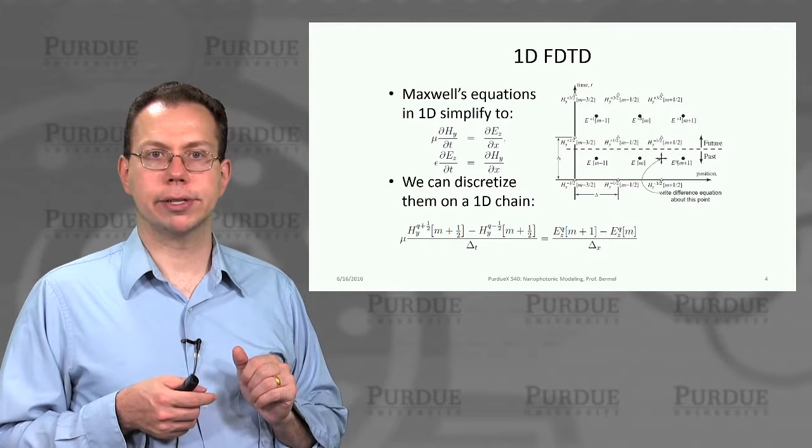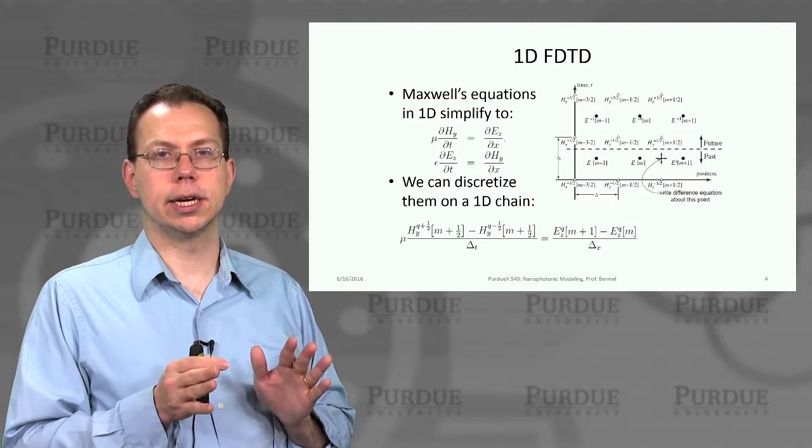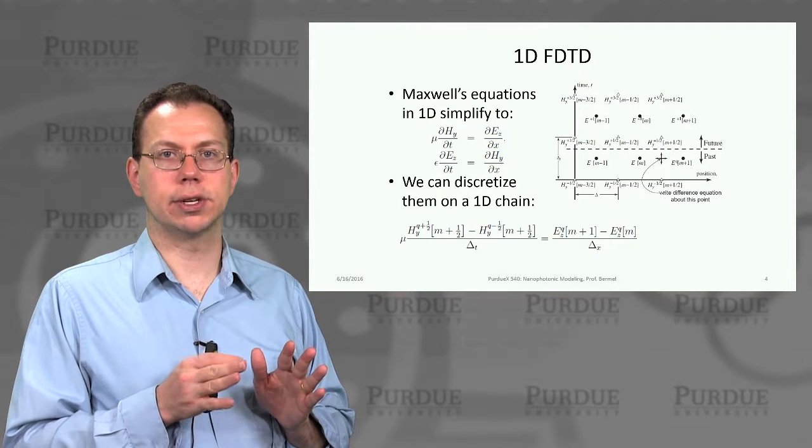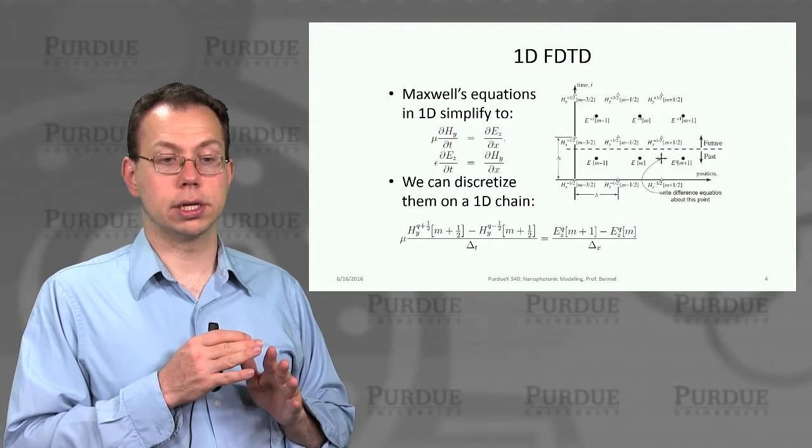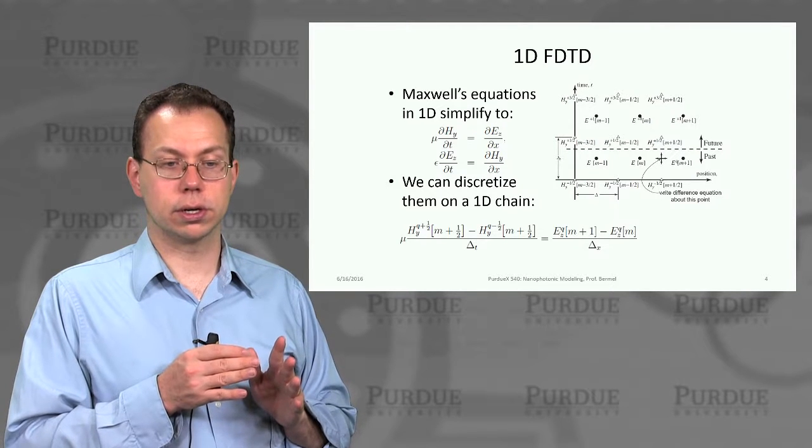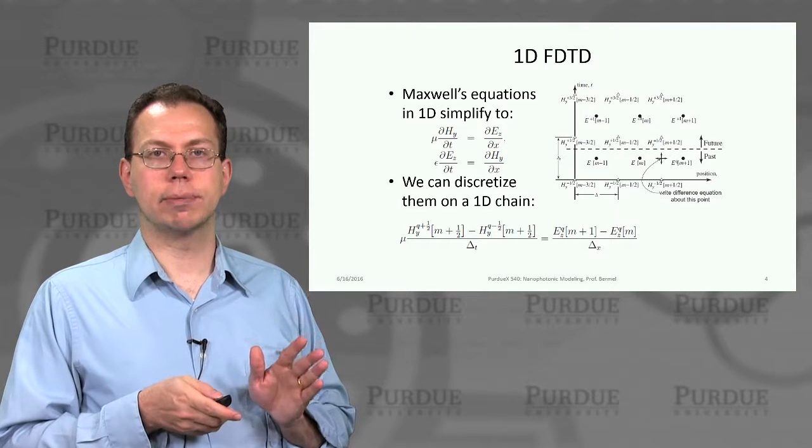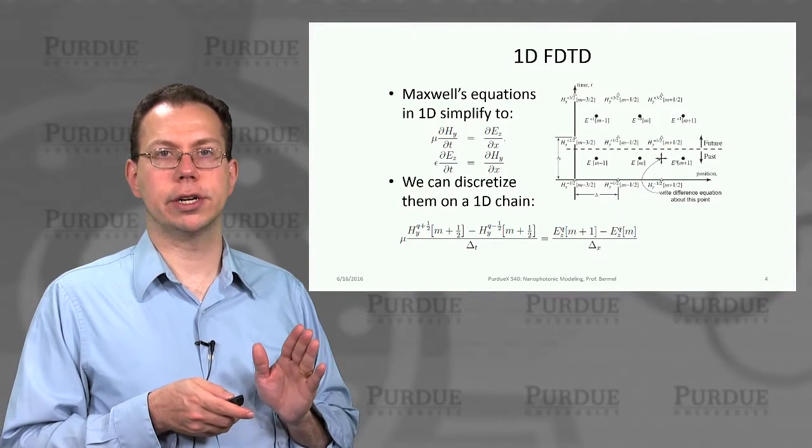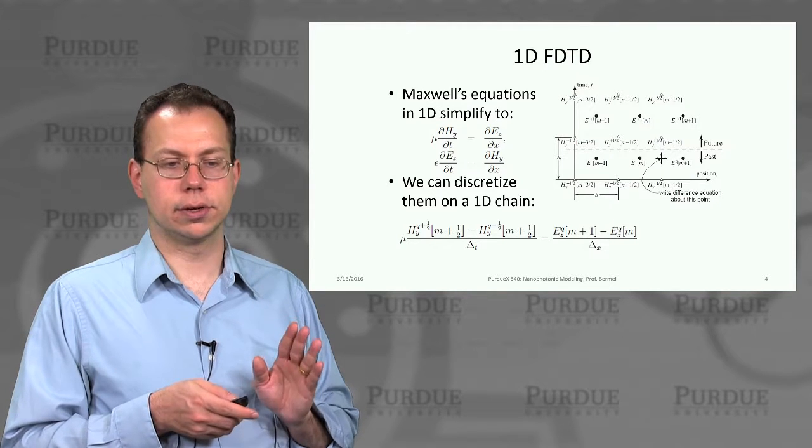And so if we take Maxwell's equations I showed you earlier, and then we drop some of the terms that are not absolutely necessary at the moment, just break it down to essentially the most basic terms. So it's essentially dropping current, any free current or bound current, as well as any free charges or bound charges.